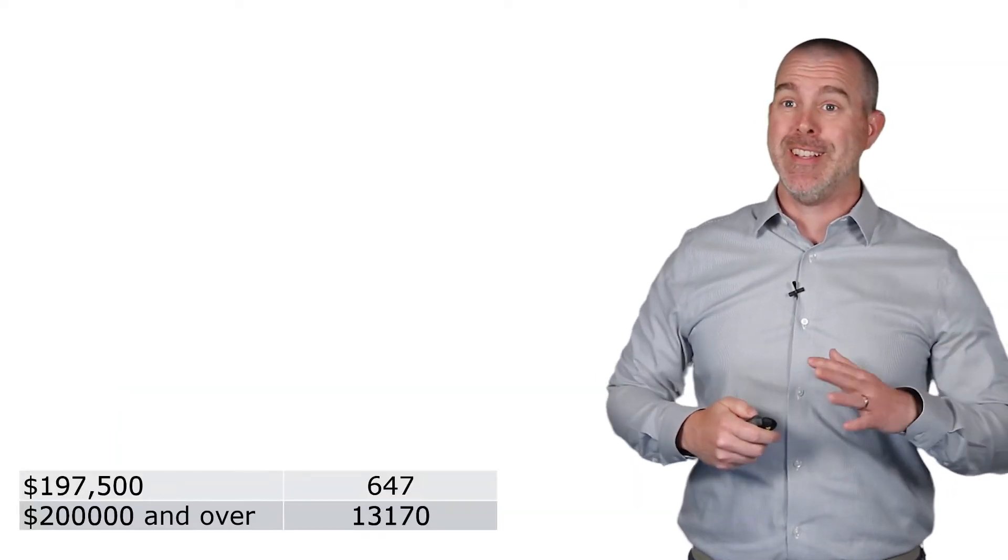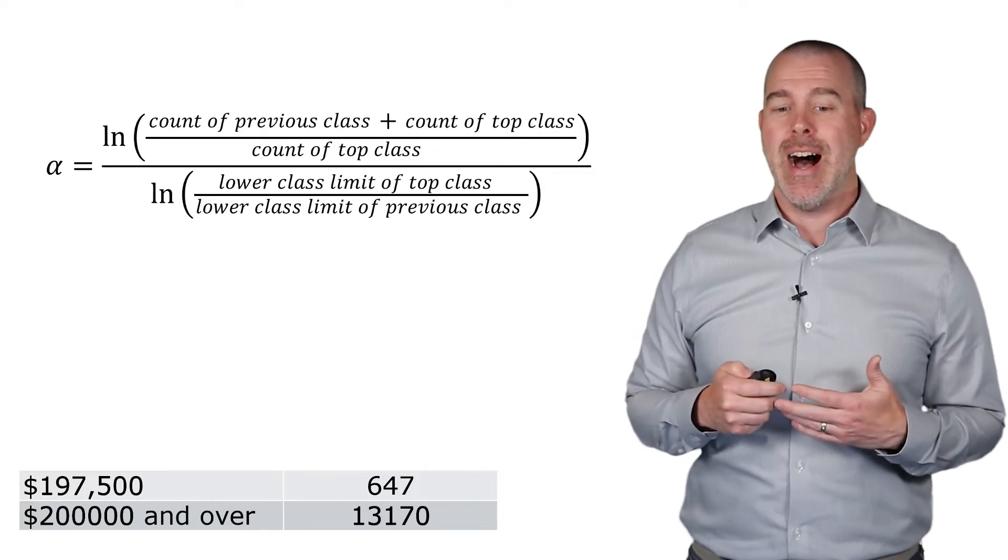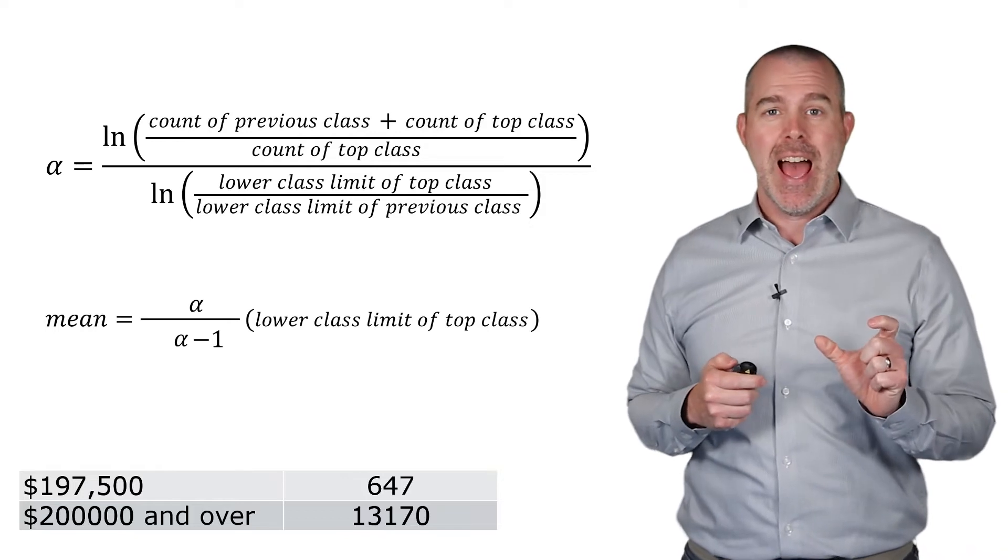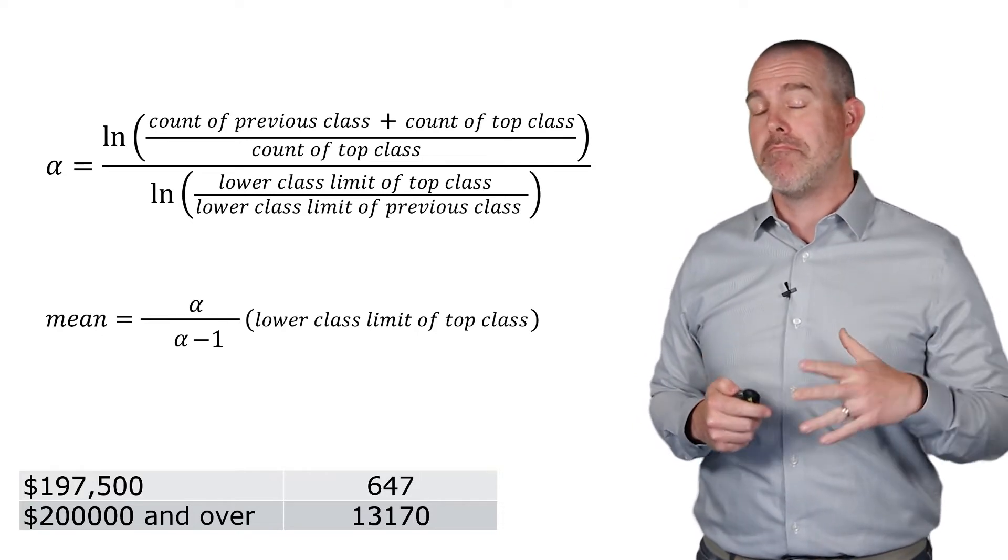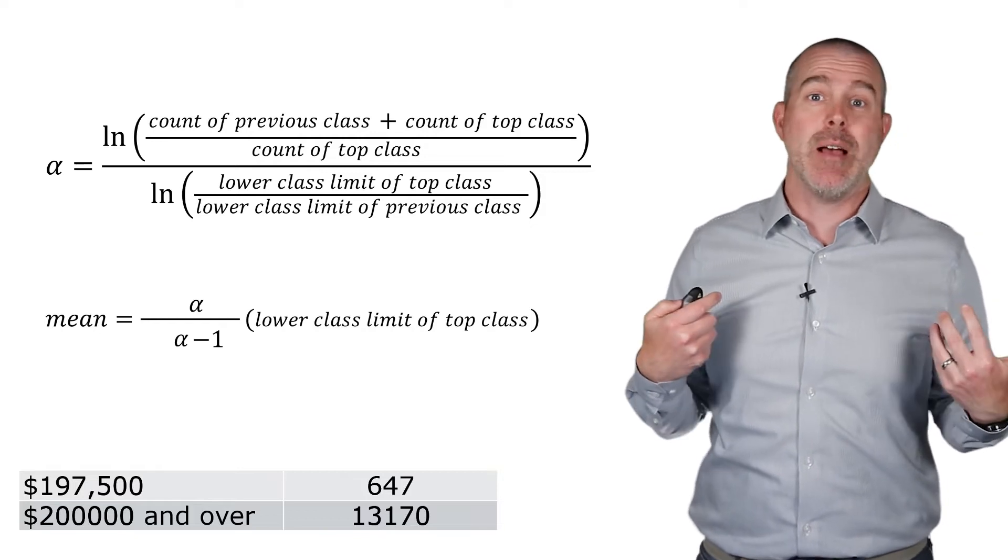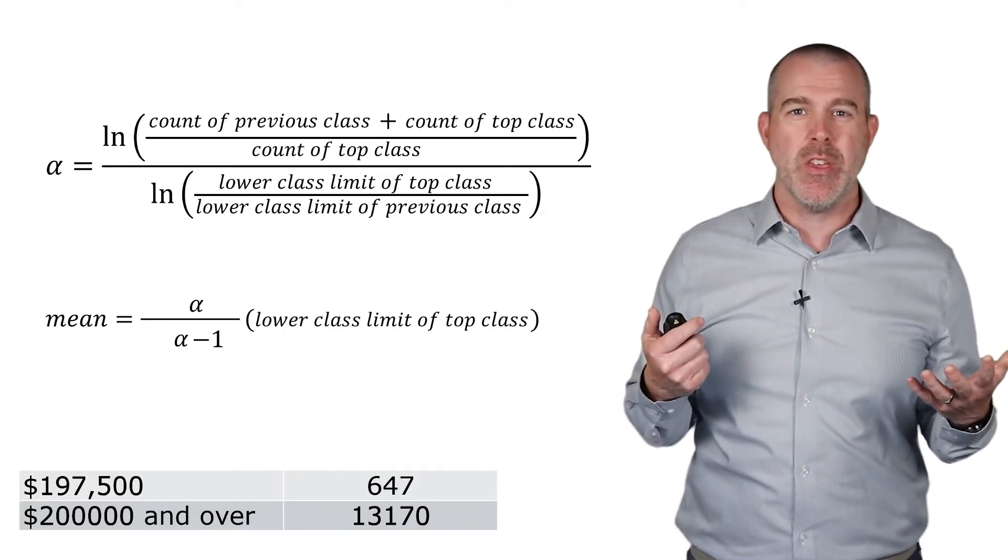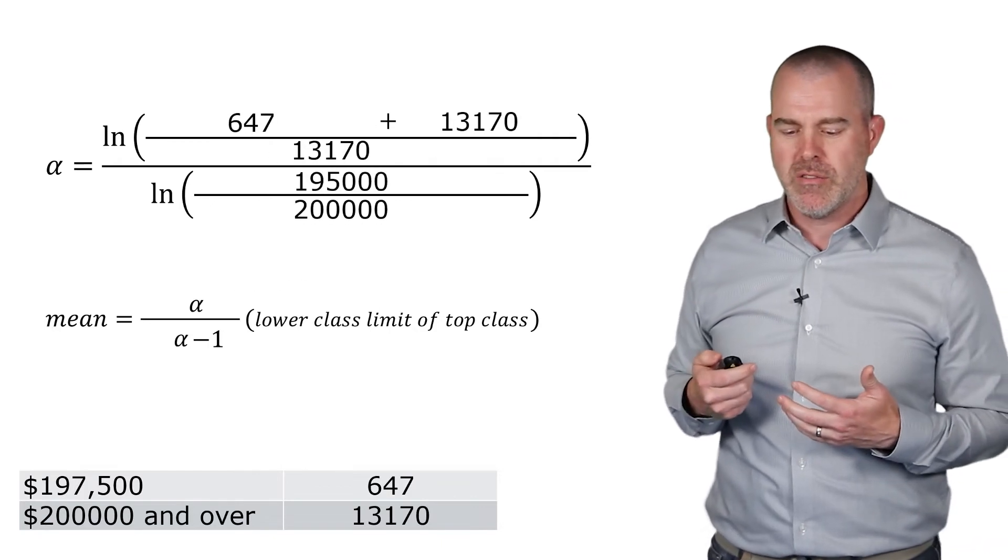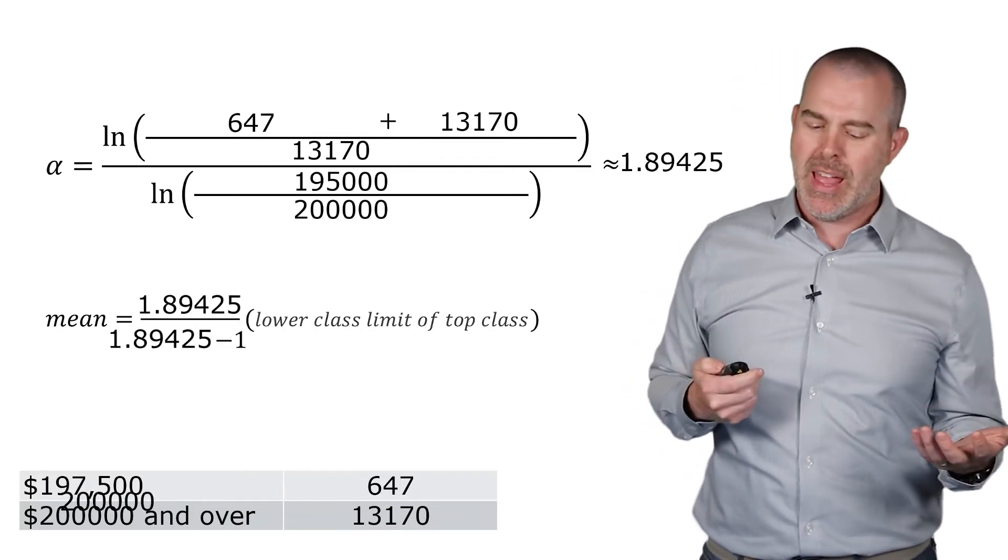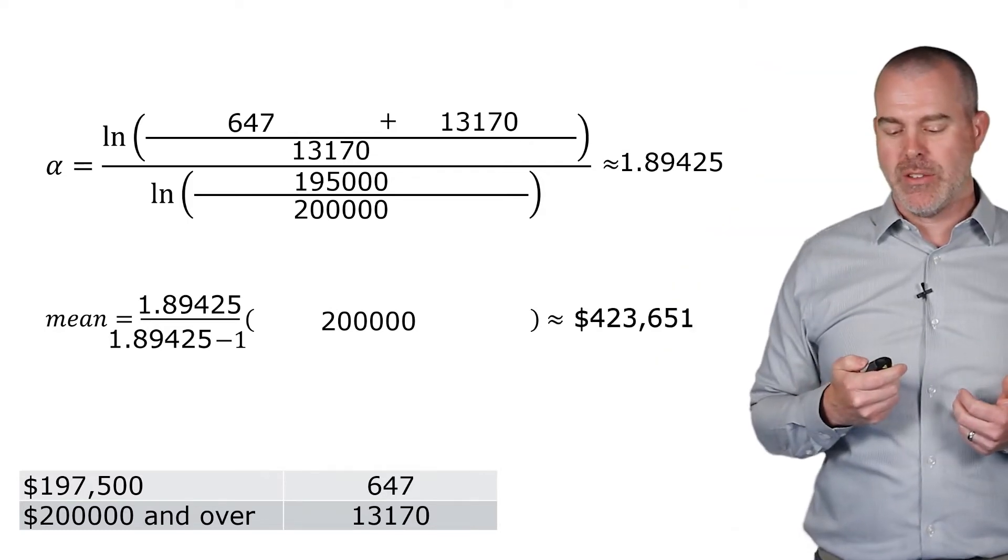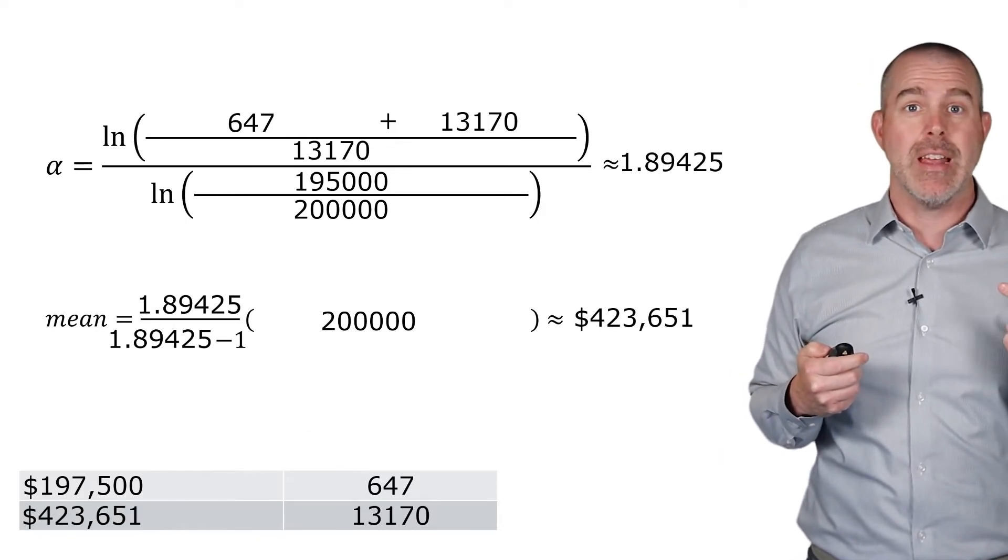Now there's actually a formula for this—again, not something you'd normally have to do. It's a pretty funky formula; you have to calculate this index, you need a natural log in here, and then you find the mean of that last class by calculating that index: alpha over (alpha minus 1). So it's a little messy, but just a formula, just plug some stuff in. It's not something that I'm super familiar with; I had to look this up to figure out what to do with group data. So if you want to make a note of this for that odd example that you might need sometime in the future, the index is about 1.89. Put that in for the alpha in the formula, calculate that, we need that lower class limit $200,000, and so we get $423,651. That's what we're gonna use in that bottom cell as the mean for that particular category.